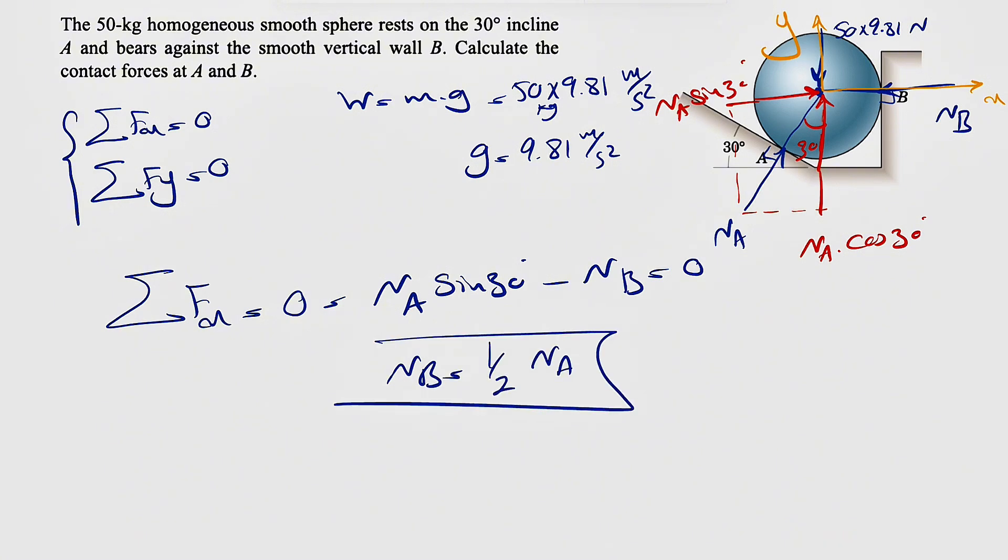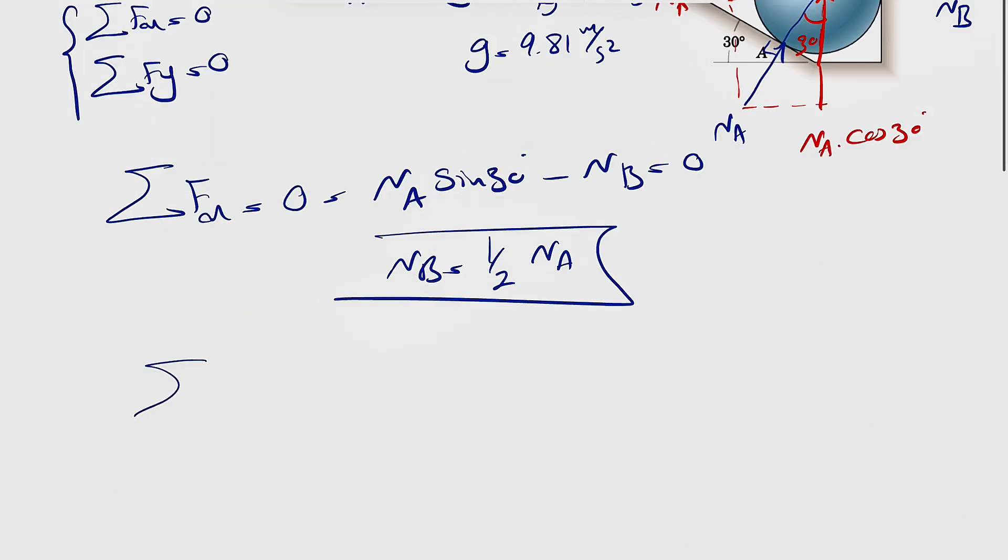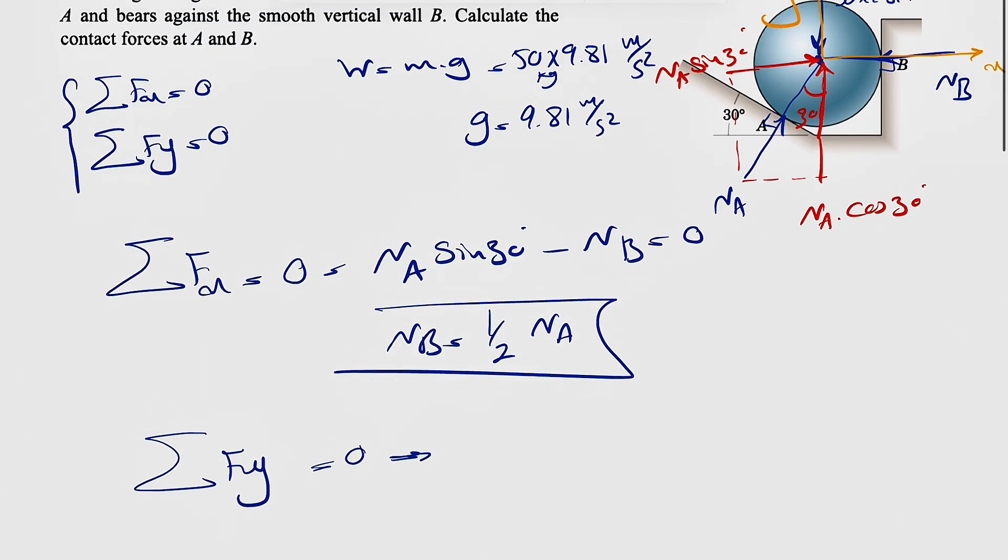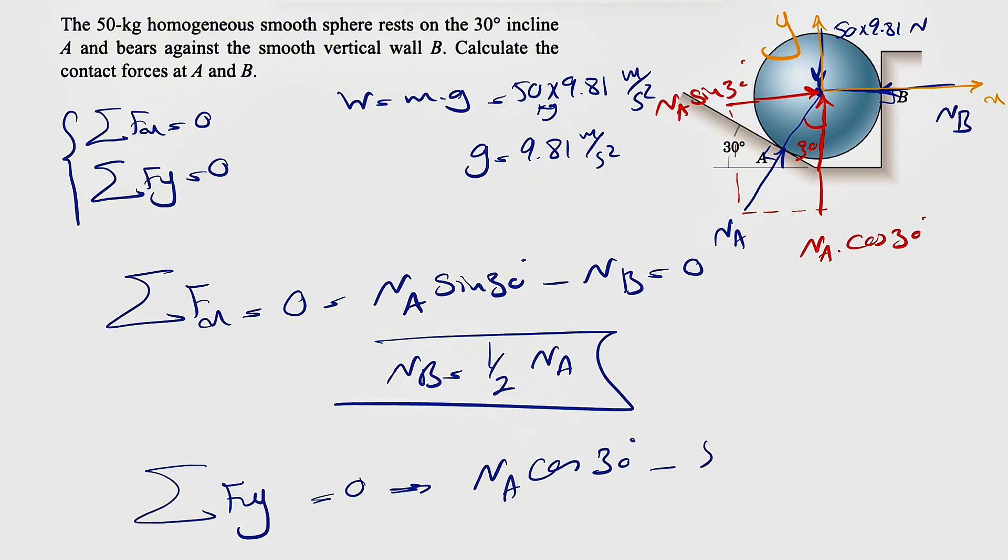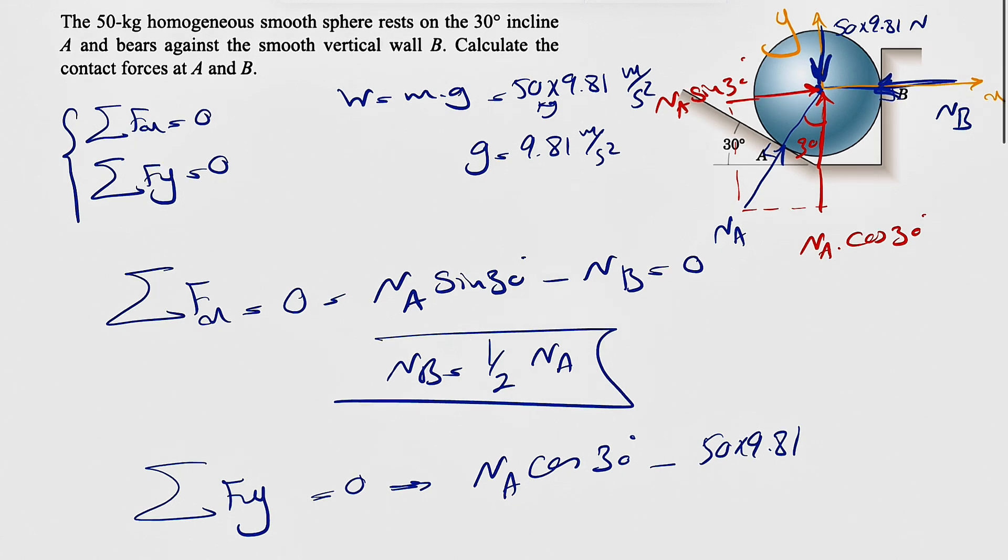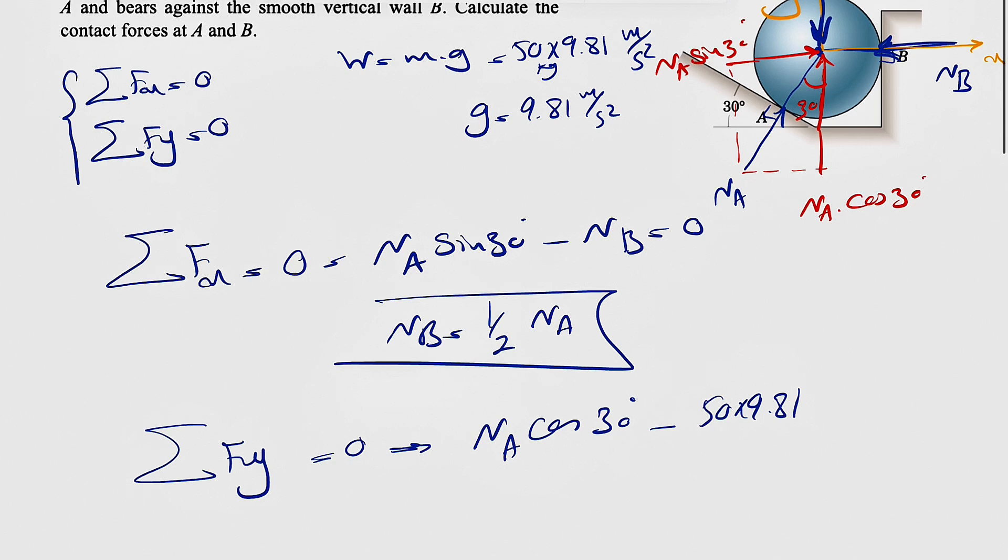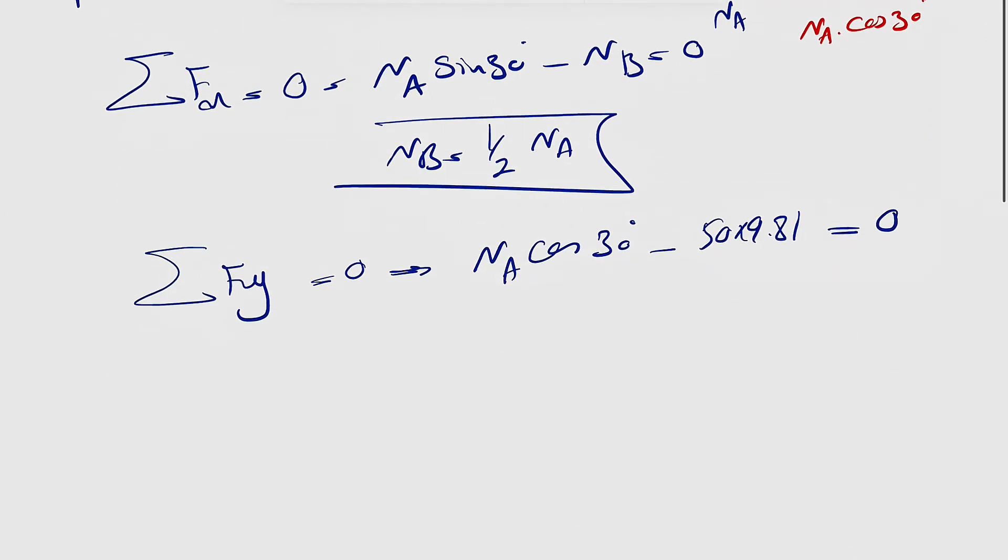If we do sum of all forces in Y equals zero, we're going to get NA cosine of 30 degrees minus the weight, 50 times 9.81, which is downward. So we're talking about this force. That's pretty much all for the forces in Y direction.